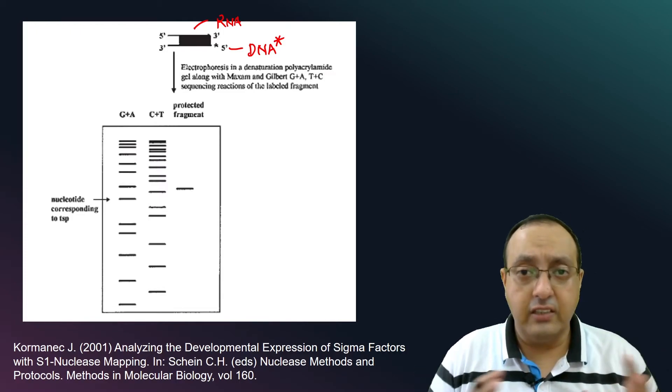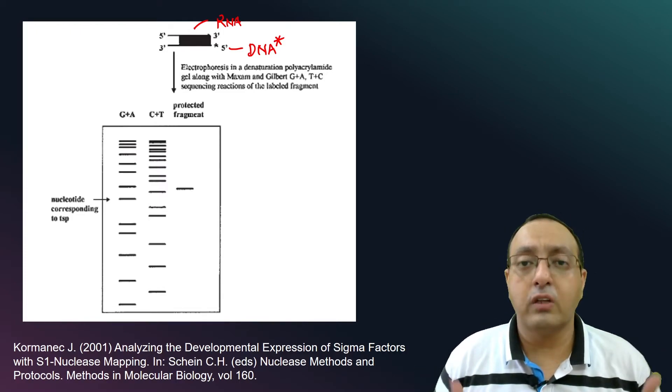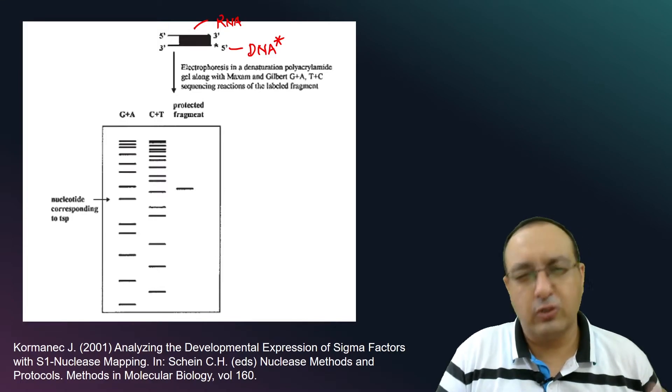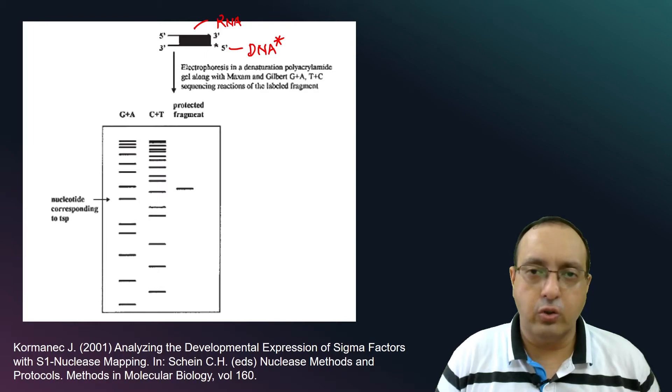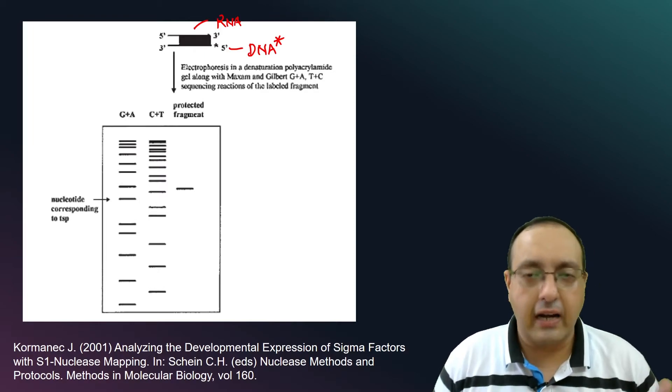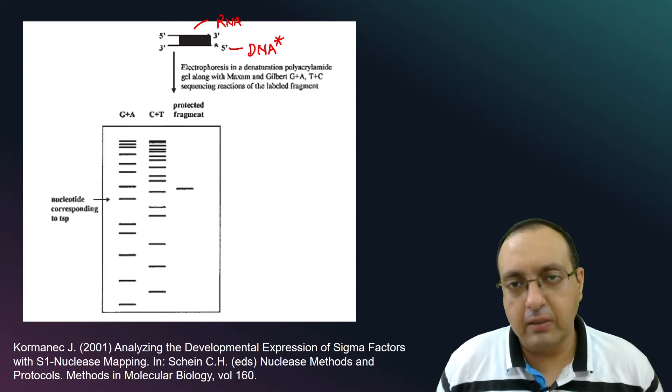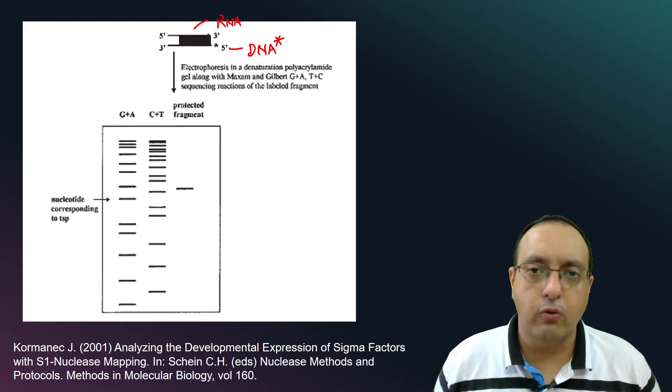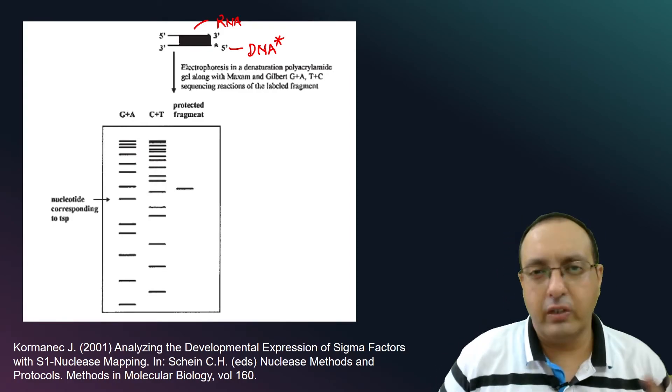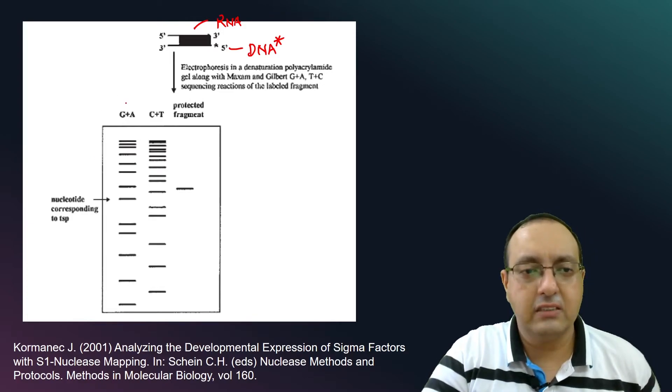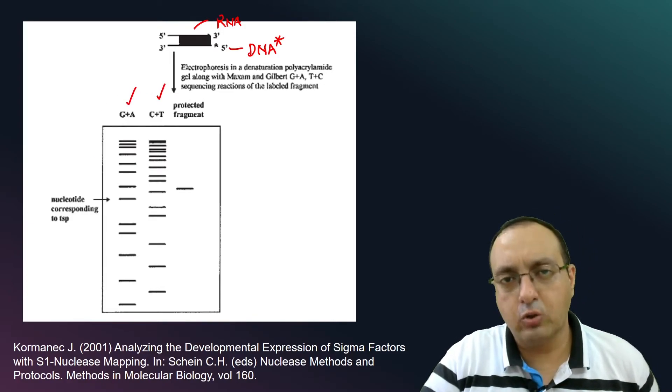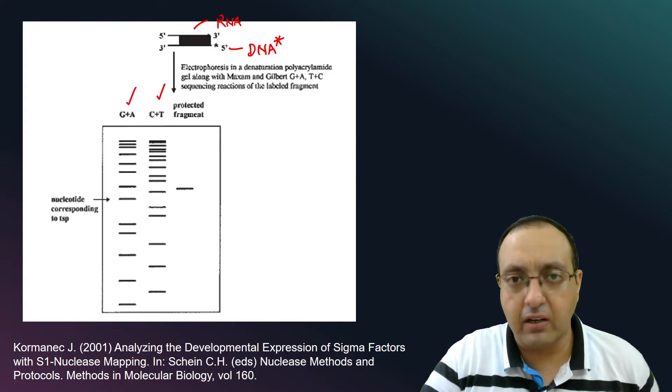We electrophorese it in a denaturing PAGE gel along with Maxim Gilbert sequencing. So this is an old method of sequencing. Now most likely we don't do it. We usually do Sanger sequencing. But at that time, Maxim Gilbert sequencing, which is also equally efficient although it is a little bit cumbersome to execute, was used. So we have two lanes G plus A, C plus T, and we sometimes also have a C lane and a G lane separately.